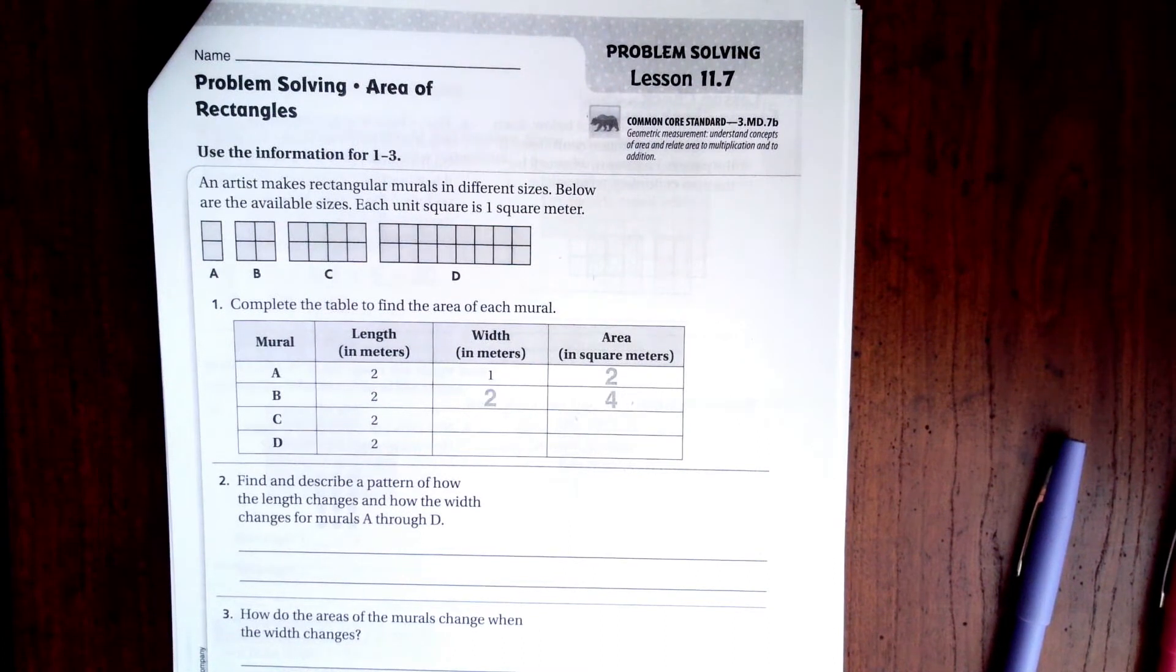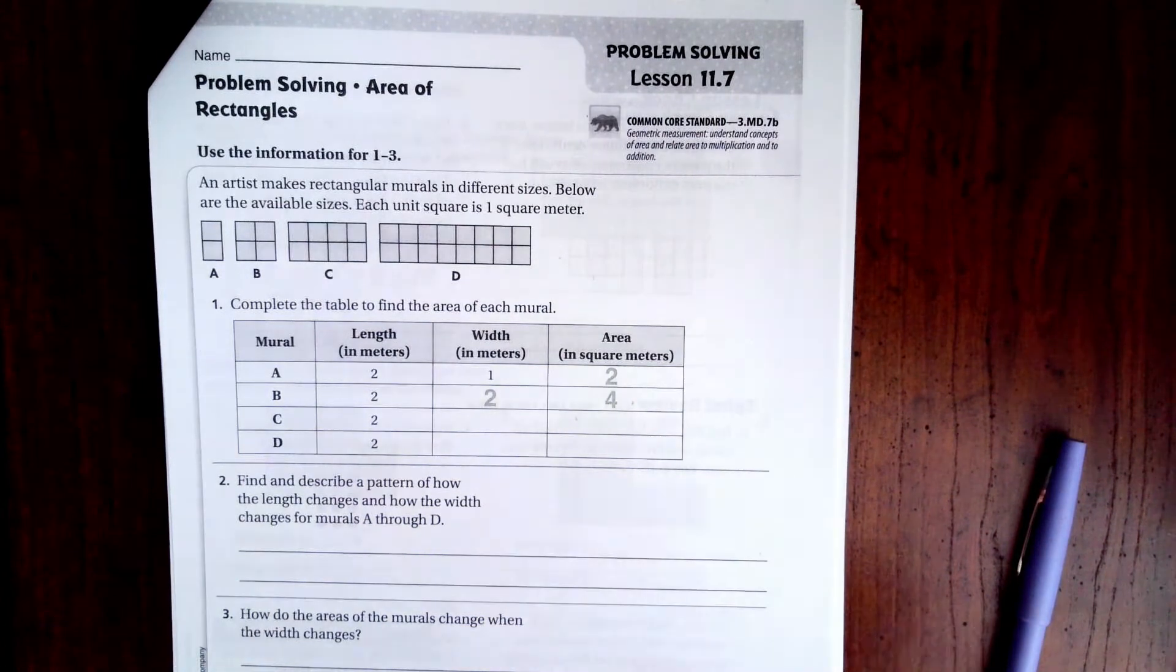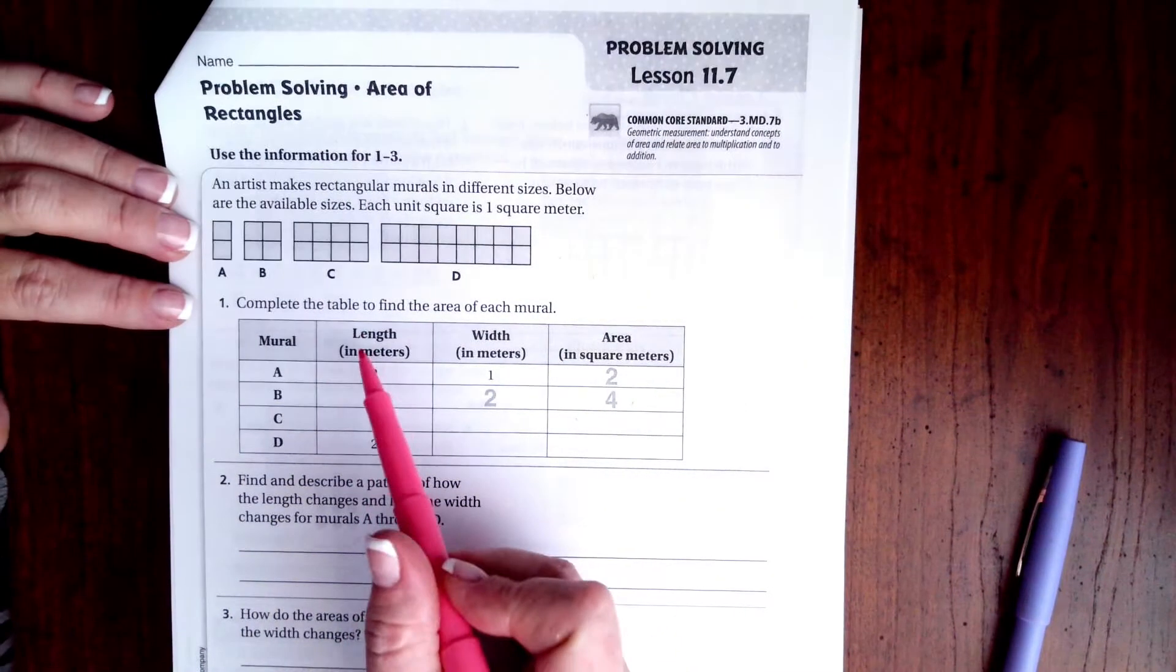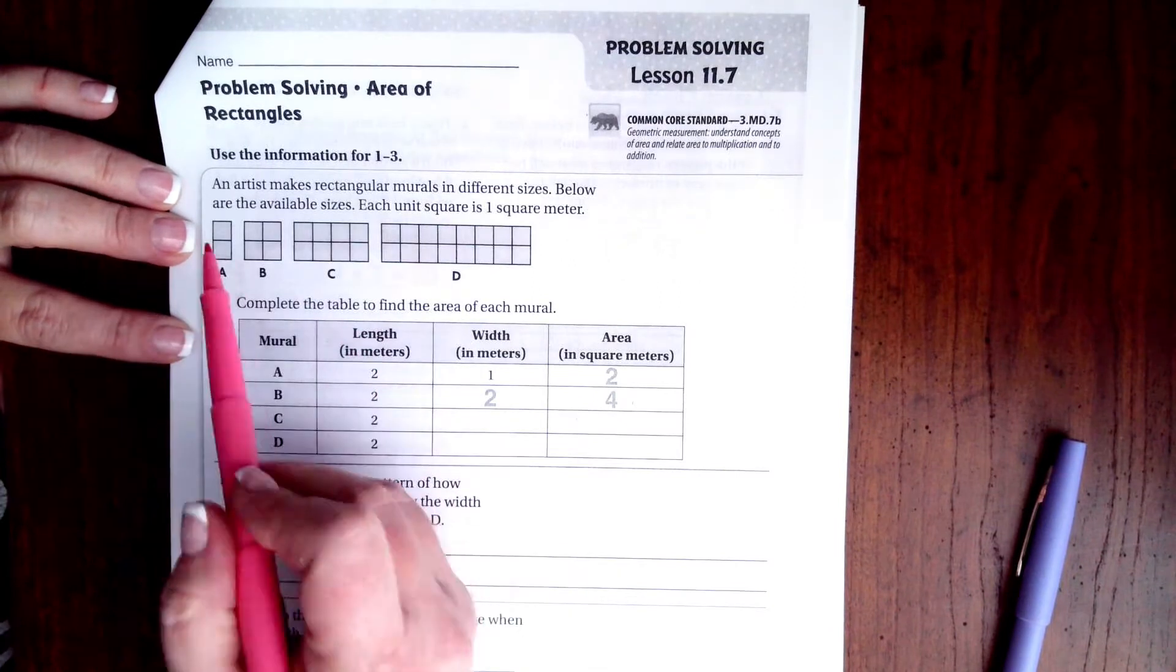Hey guys, welcome to third grade chapter 11 lesson 7. We're going to go ahead and get started by filling out the rest of this table. You'll notice that it says the length of each one of these is two.